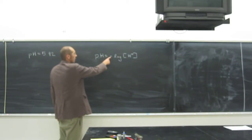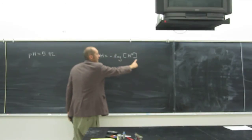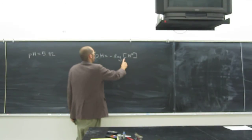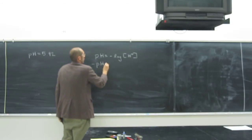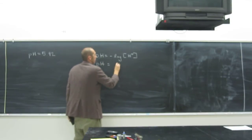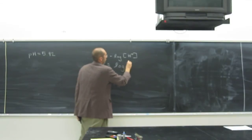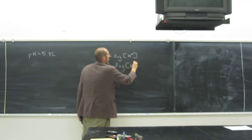Remember, we want to isolate the variable. So what are we going to do? We're going to multiply both sides by negative 1. So we get negative pH equals the log of the H plus concentration.